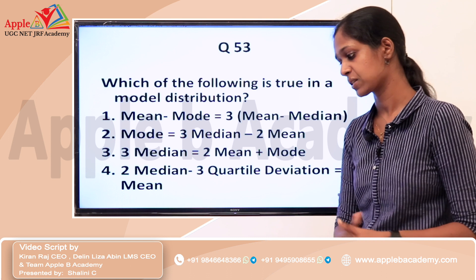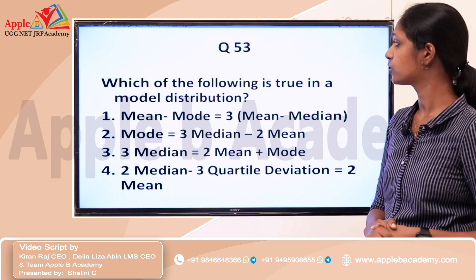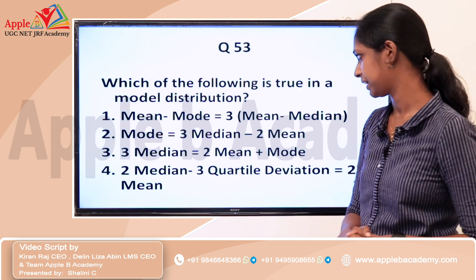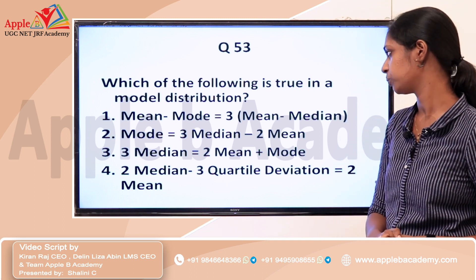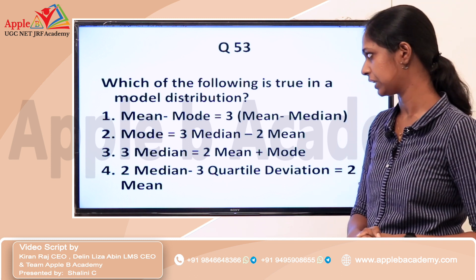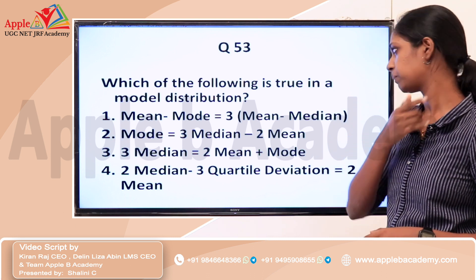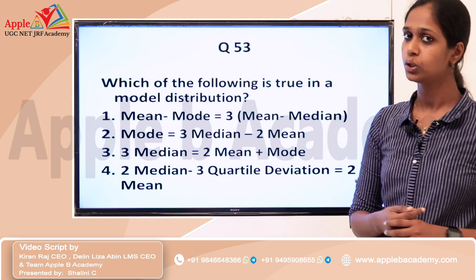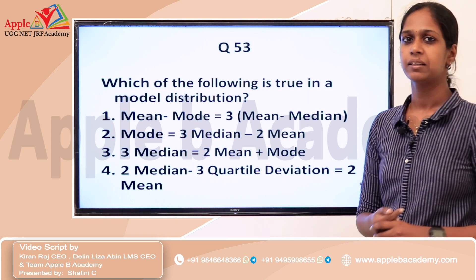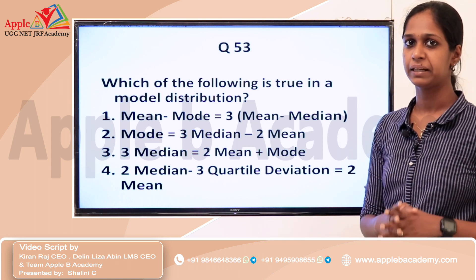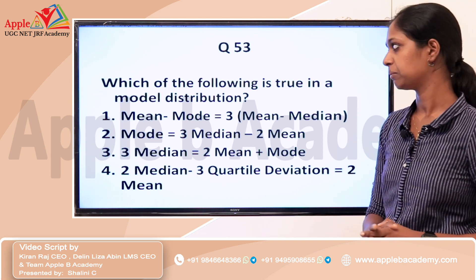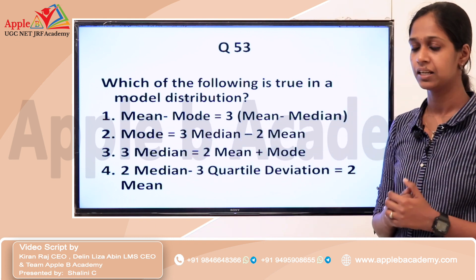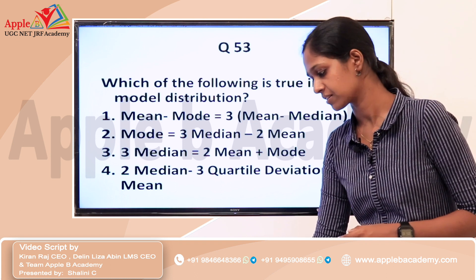Next question: which of the following is true in a modal distribution? We know that the relationship between mean, median, and mode is: Mean − Mode = 3 × (Mean − Median). So option 1 is the answer.